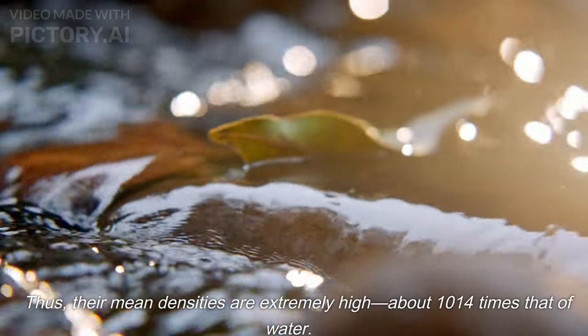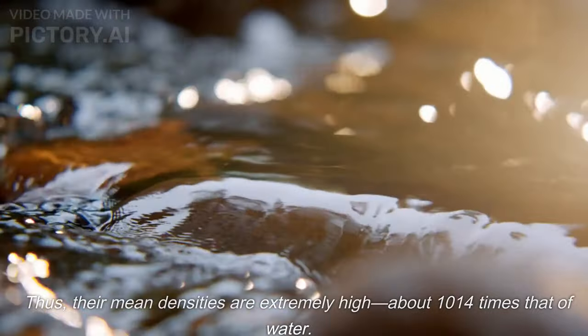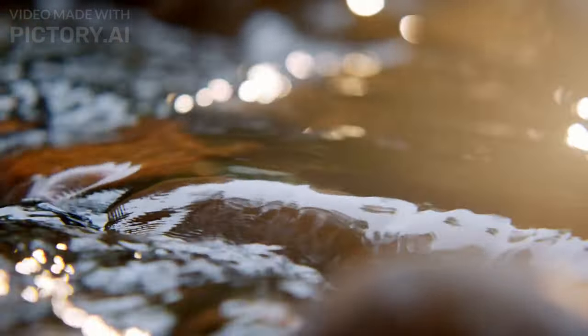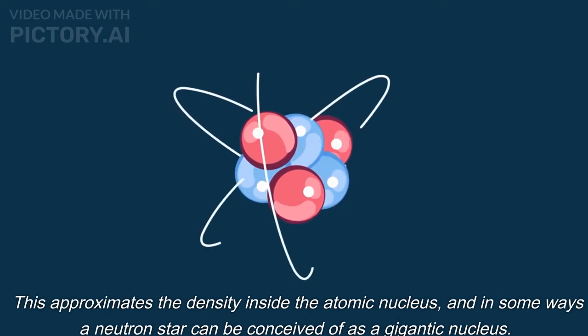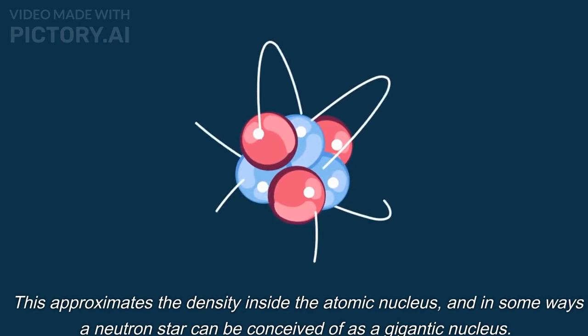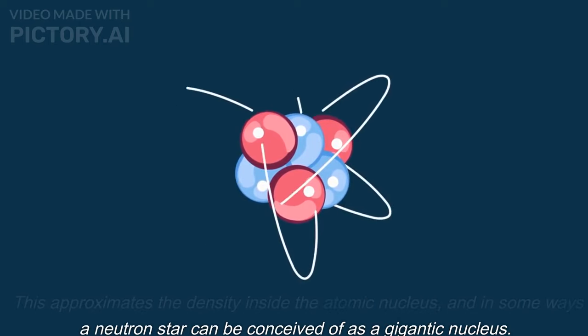Thus, their mean densities are extremely high, about 10^14 times that of water. This approximates the density inside the atomic nucleus, and in some ways a neutron star can be conceived of as a gigantic nucleus.